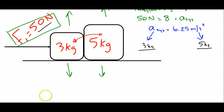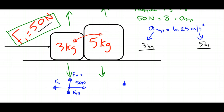Looking at free body diagrams for each object: the 3 kilogram object has a 50 newton force to the right, and F5 — the force from the 5 kilogram object — pulling back, along with normal force Fn3 and gravitational force Fg3. The 5 kilogram object has Fn5, Fg5, and the force from the 3 kilogram object, F3. The vertical forces cancel, so we can write net force expressions for each object.